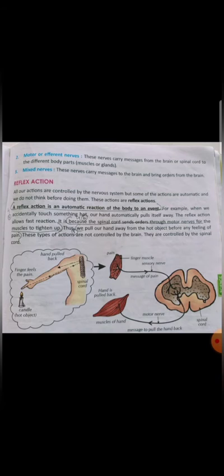It is a very fast reaction because the spinal cord sends orders through motor nerves for the muscles to tighten up. In this way, we pull our hand away from the hot object before any feeling of pain — before we sense anything, our action is performed. This is reflex action. These types of actions are not controlled by the brain; they are only controlled by the spinal cord.